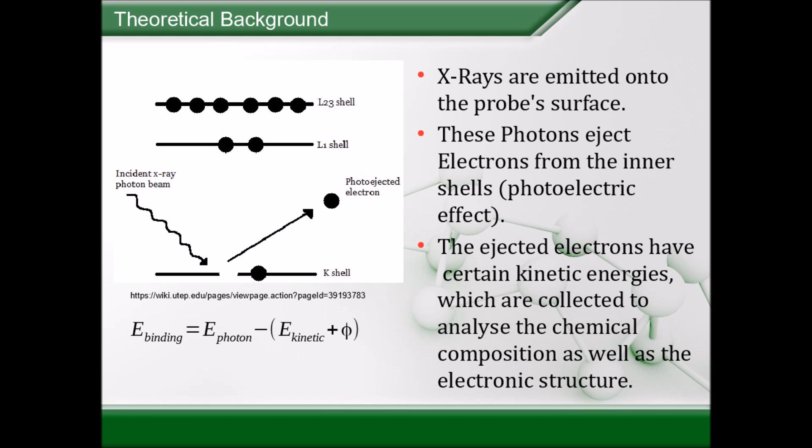The work function is defined as the minimum energy needed to remove an electron from a solid to a point in the vacuum immediately outside the solid surface. So the electron should be far from the surface. Now by detecting and measuring the energy of this electron, that is of course unique for each element, one is able to determine the composition of the sample.